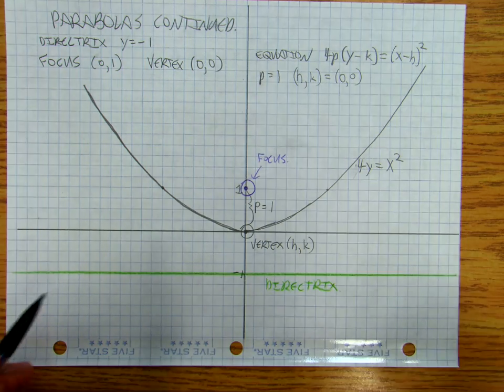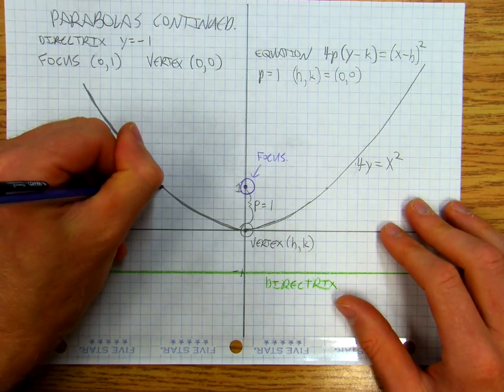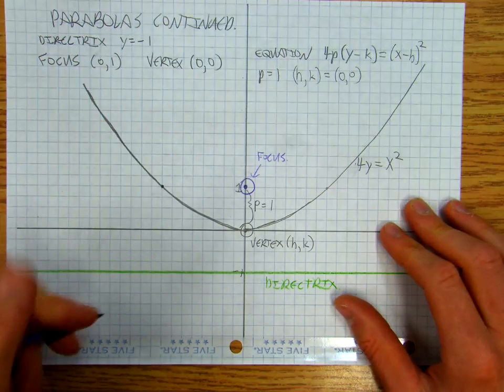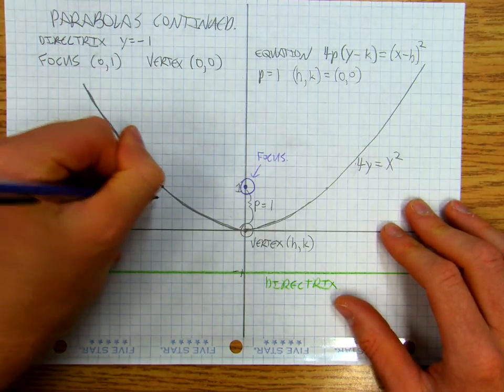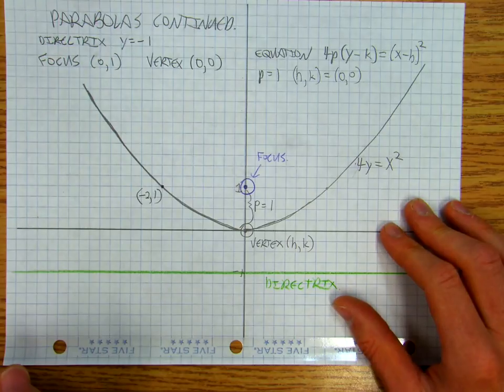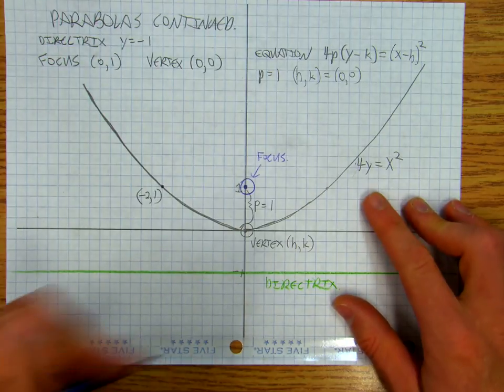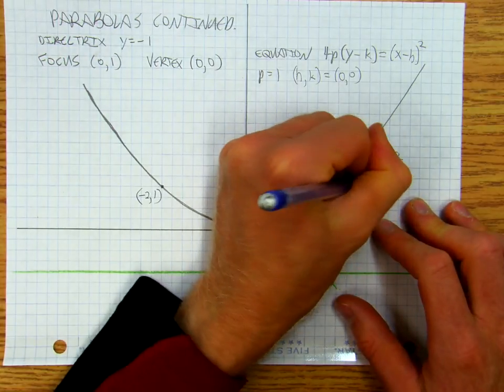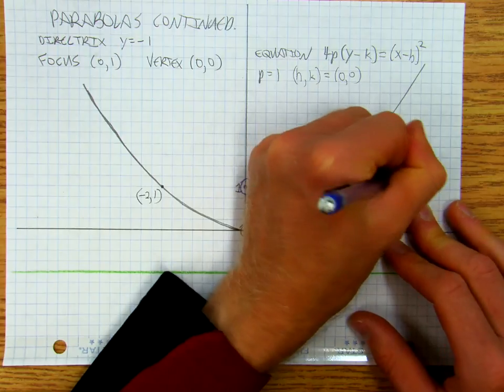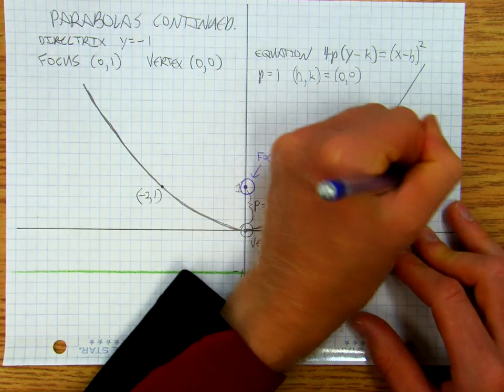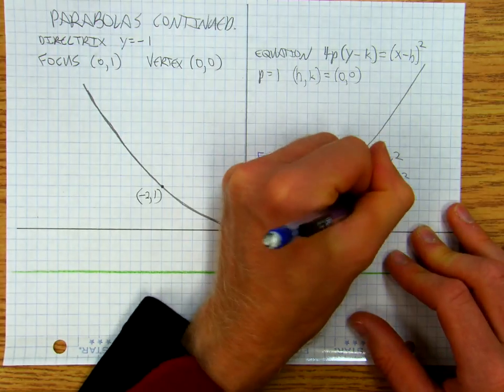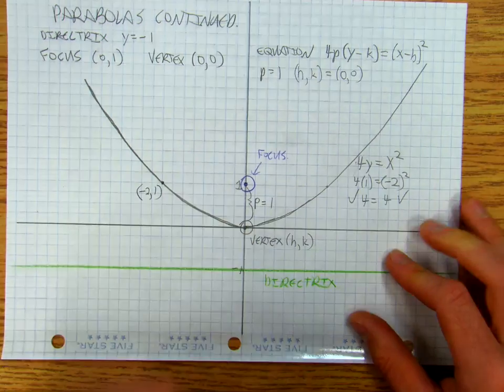Okay. So we can choose some points. That point there is the point (-2, 1). And so if I do 4 times 1 equals negative 2 squared, I get 4 equals 4, which is correct.